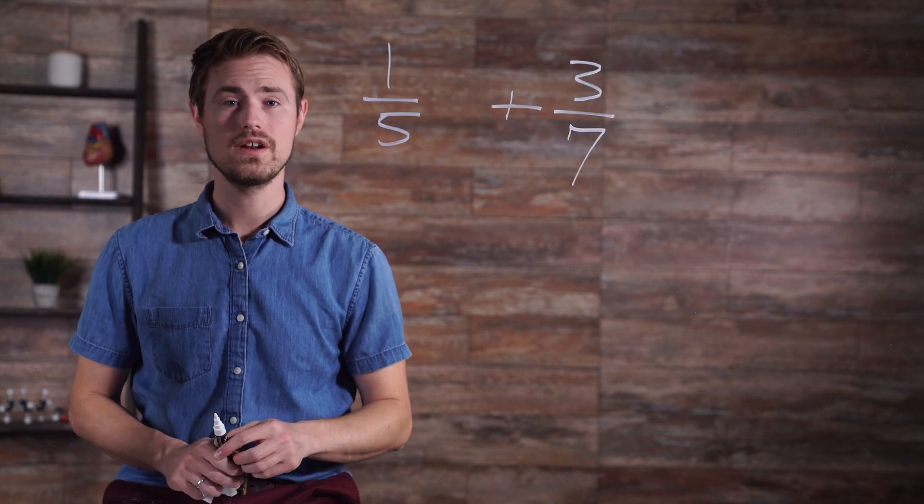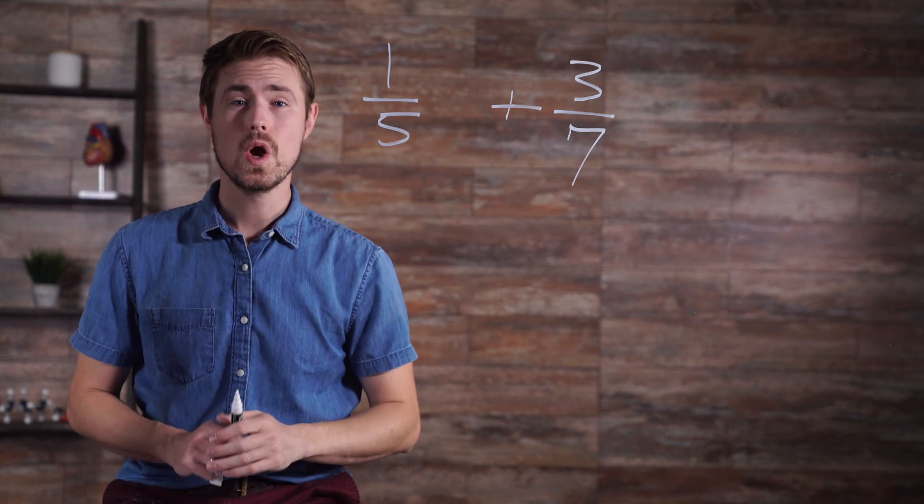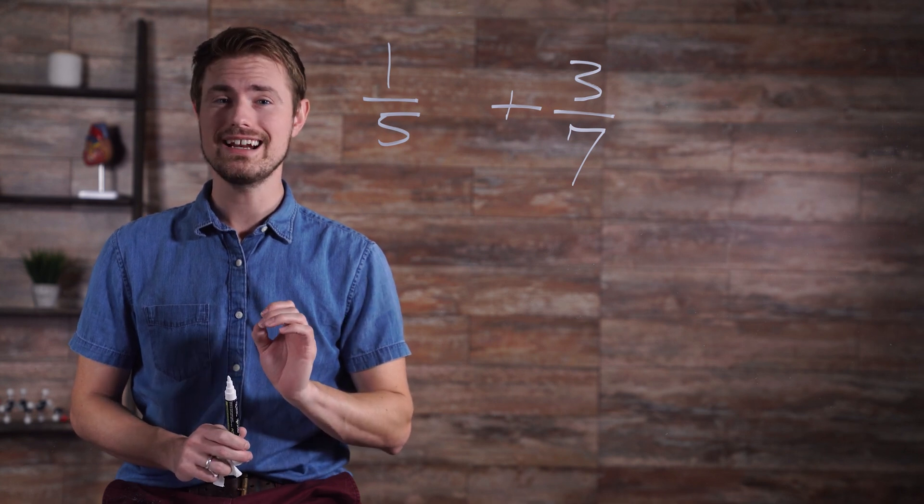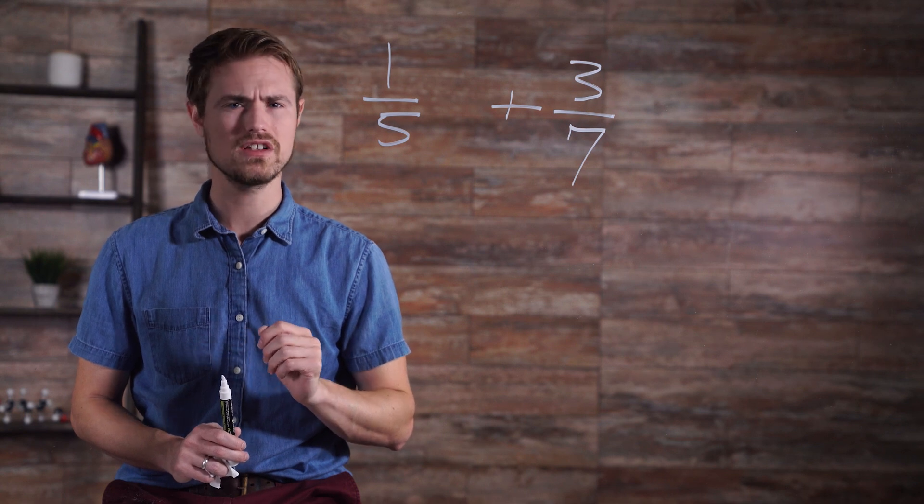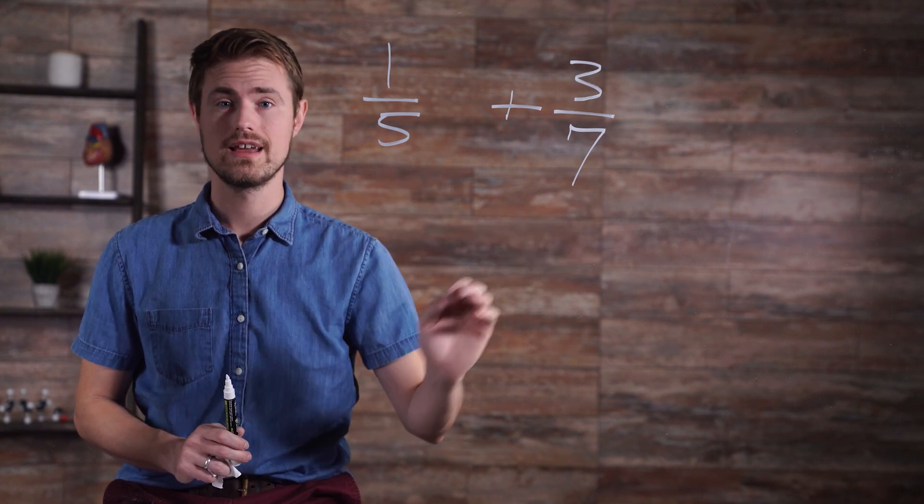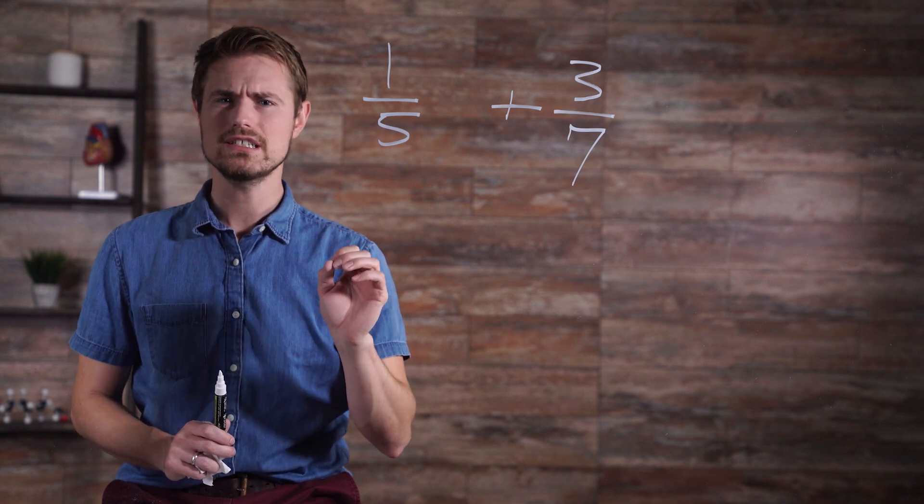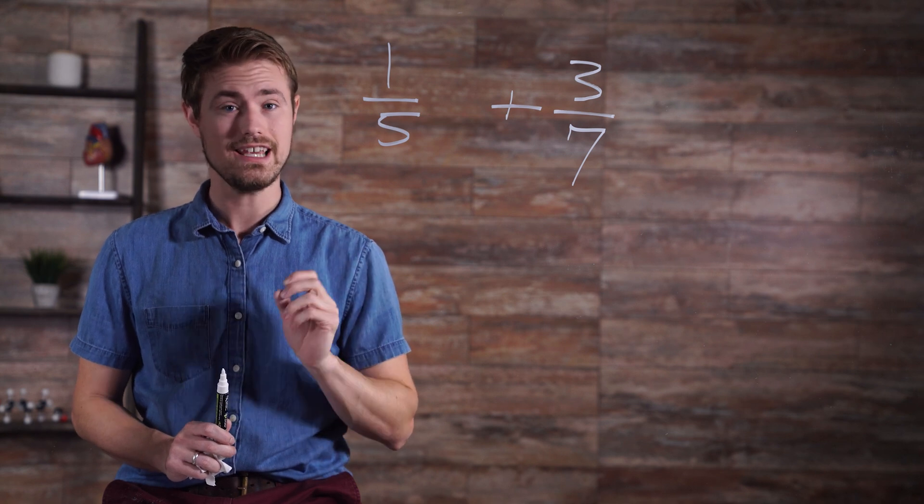Let's look at an example with fractions. In order to add 1 over 5 to 3 over 7, we must create a common denominator. Specifically, we need to determine the least common denominator, meaning the smallest multiple of 5 and 7. In this case, that number is 35.